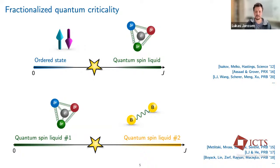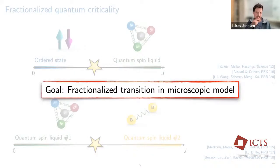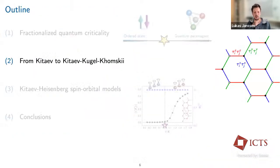Such transitions are extremely hard to describe theoretically because the nature of the excitations is unclear, a fluctuating gauge field often induces a sign problem for quantum Monte Carlo, and it renders the usual mean field theory uncontrolled. The goal of this talk is to present a microscopic model that overcomes these challenges — one that features a fractionalized transition and can be accessed in a fully controlled theoretical approach. This will be a spin-orbital generalization of the Kitaev model.